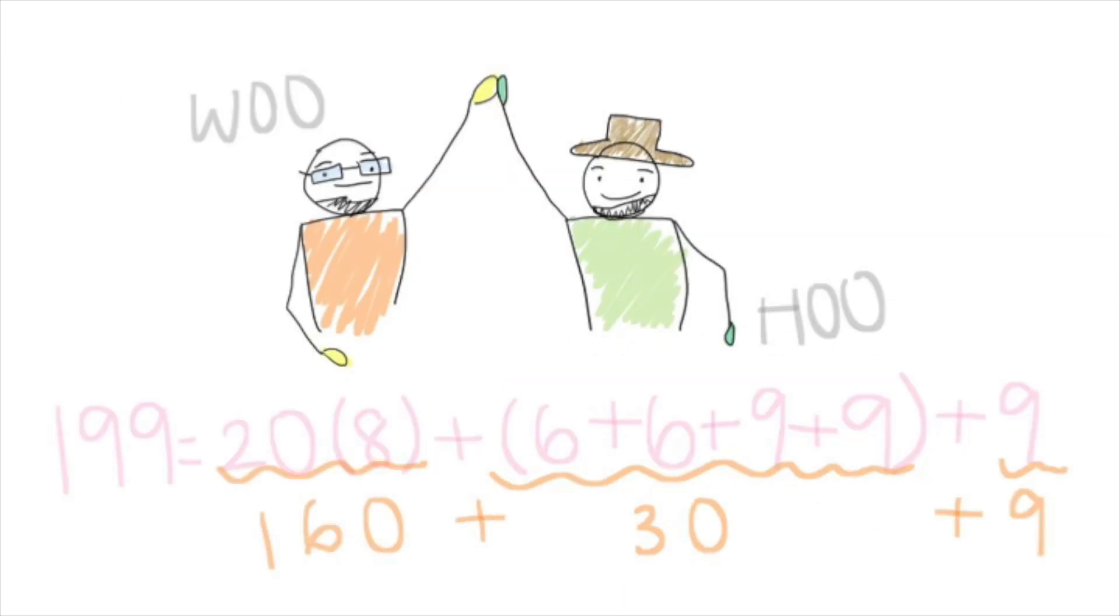With that, we can make 199 by 8 20s, 2 6s, and 3 9s!